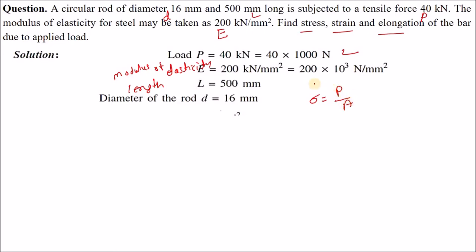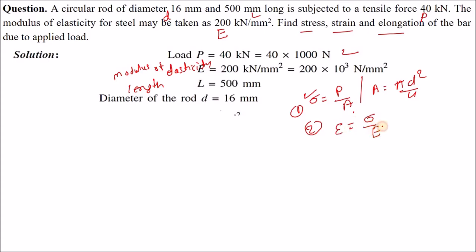Stress sigma equals load divided by area. We need to find the area, which for a circular section is π/4 × d². Once we have the area and load, we get the stress. The second thing is strain, which equals sigma divided by E.